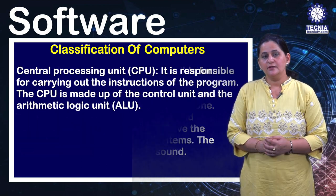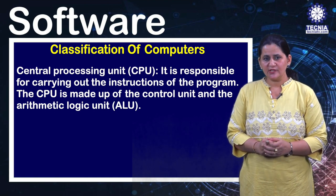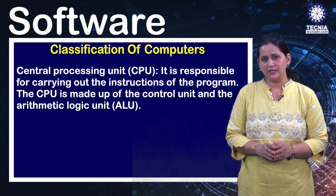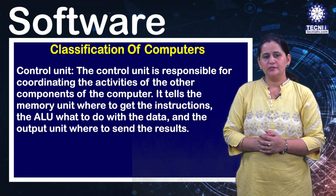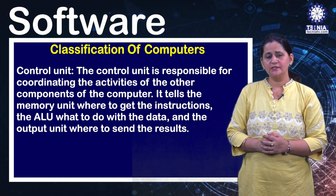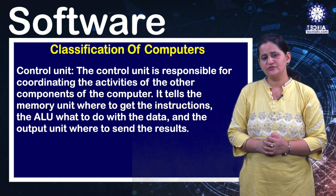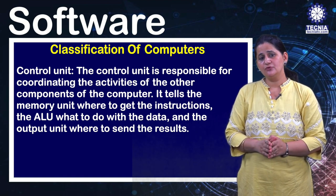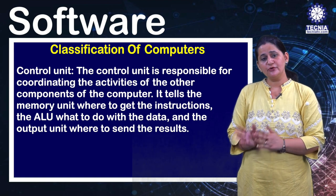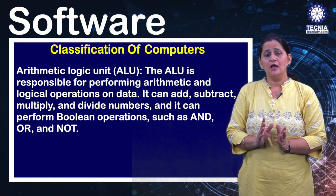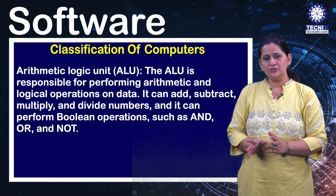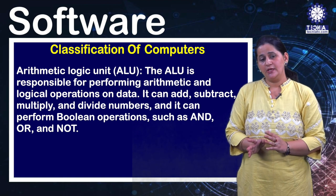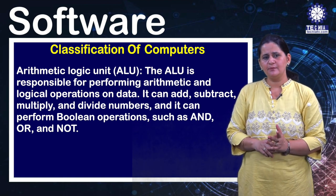The CPU is responsible for carrying out the instructions of the program. It is made of the control unit and the ALU. The control unit coordinates the activities of the other components, telling the memory unit where to get instructions, the ALU what to do with the data, and the output unit where to send the results. The ALU performs arithmetic and logical operations, including addition, subtraction, multiplication, division, and boolean operations such as AND, OR, and NOT.